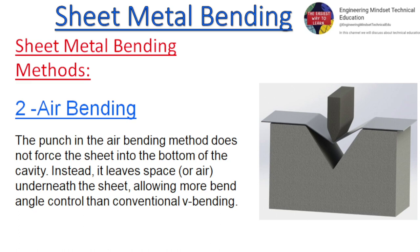Air bending: The punch in the air bending method does not force the sheet into the bottom of the cavity. Instead, it leaves space underneath the sheet, allowing more bend angle control than conventional V-bending.